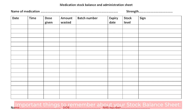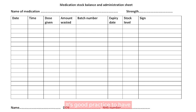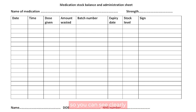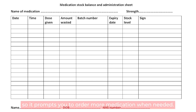Important things to remember about your stock balance sheet: it's good practice to have an individual sheet for each medication so you can see clearly what's been given when, and you can clearly see a stock level so it prompts you to order more medication when needed.